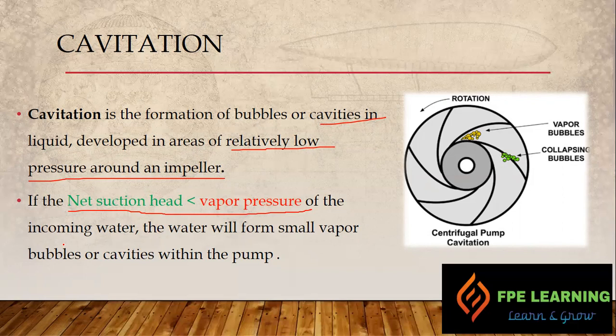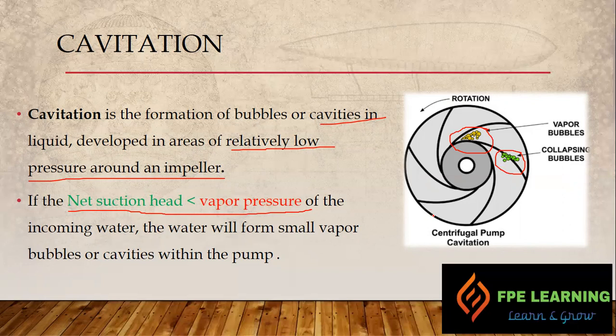If the suction head is less than the vapor pressure — the pressure we are getting at the suction flange — the water will form small vapors or cavities within the pump. These small vapor bubbles form in the low pressure region when liquid enters the pump. Those bubbles then collapse violently upon entering the high pressure regions, causing localized stress concentration and vibration, leading to mechanical failure of the pump. This phenomenon we call cavitation.